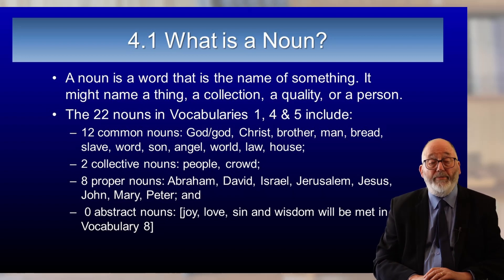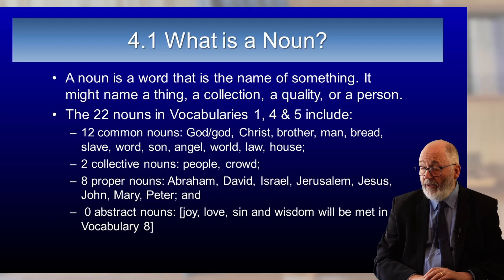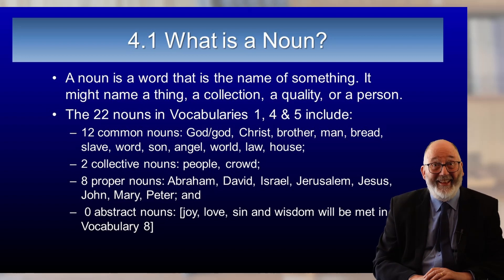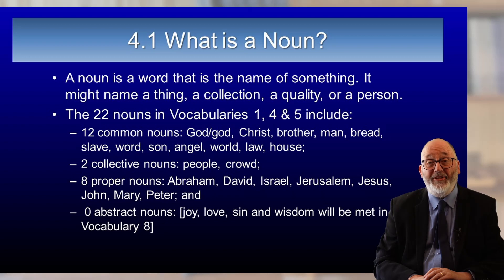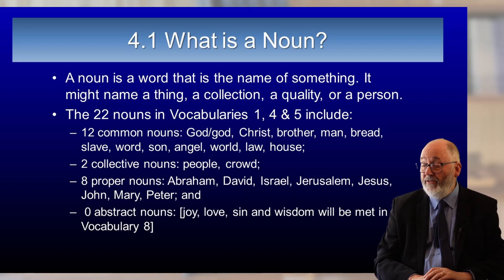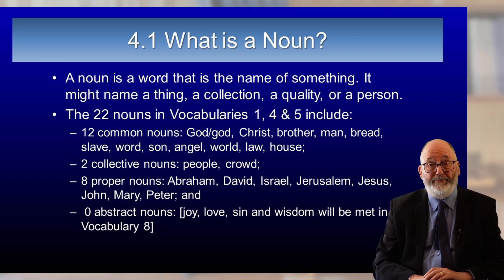There are eight proper nouns: Abraham, David, Israel, Jerusalem, Jesus, John, Mary, and Peter. And there are no abstract nouns in those early chapters. You have to wait until the vocabulary in chapter eight to find the abstract nouns joy, love, sin, and wisdom. So those are all nouns.